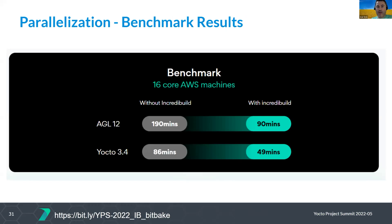We came up with a nice result: by parallelizing to AWS machines, we get down from 190 minutes to 90 minutes for AGL, and from 86 to 49 minutes for another configuration. This is without caching — assuming a clean, fresh build. For sure, if we have caching, both numbers would go down further. I'll talk about caching tomorrow, and you all know that at the end, you do pay for each new build.